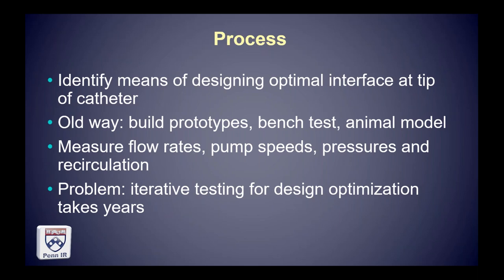Recirculation is an important concept in dialysis — it means already dialyzed blood is going through the dialysis circuit again through the membrane and machine, thereby diminishing the efficiency of hemodialysis. So you want the least amount of recirculation possible. The problem is this iterative testing for an optimal dialysis catheter design takes years because of the lack of accuracy and reproducibility in bench testing and animal models.